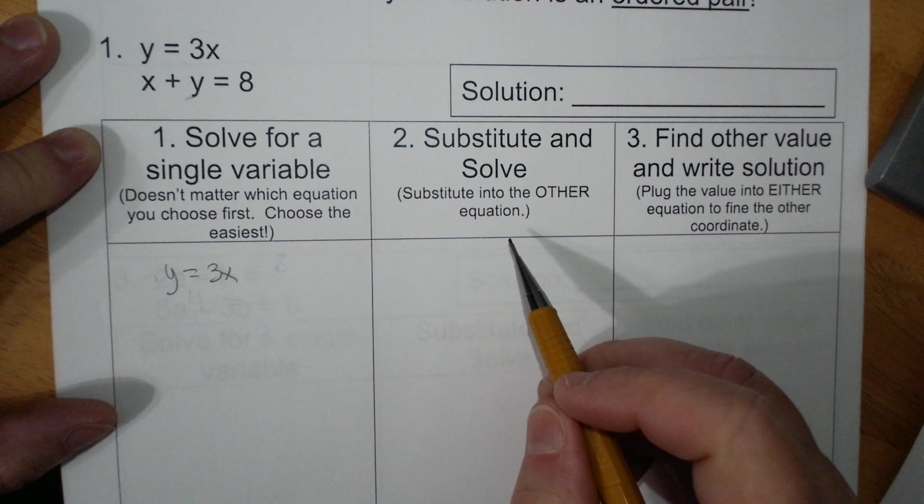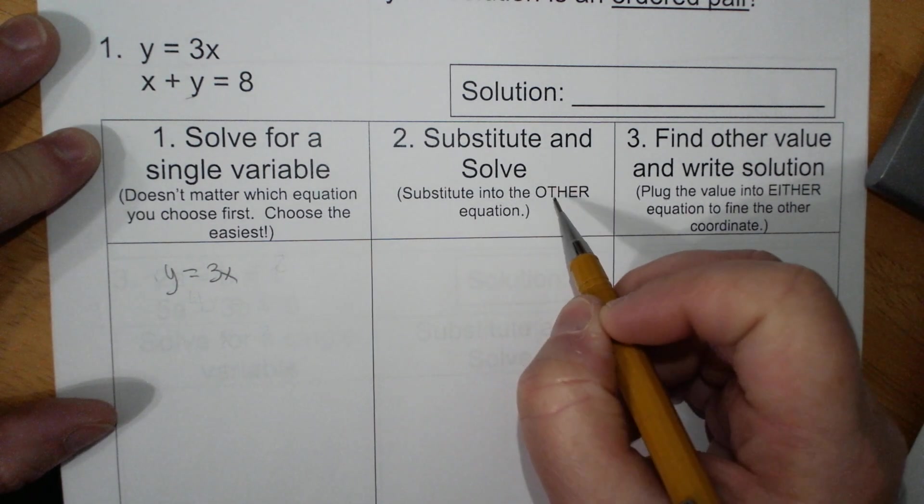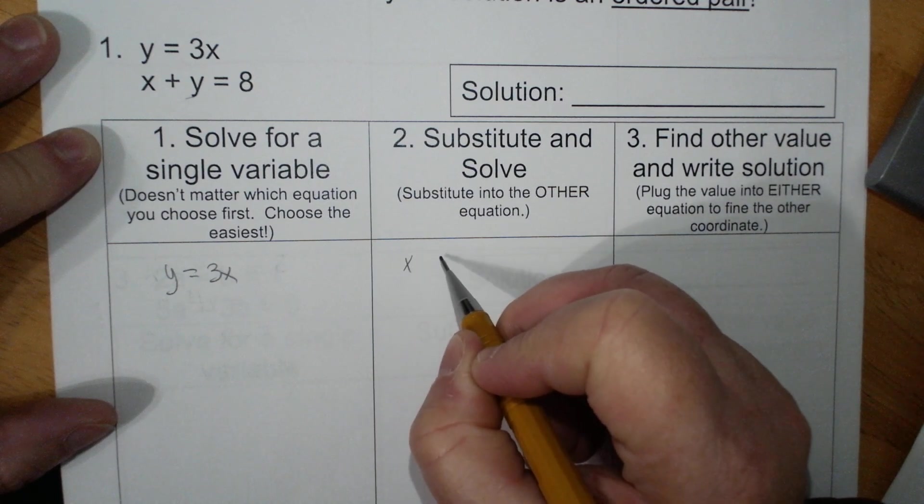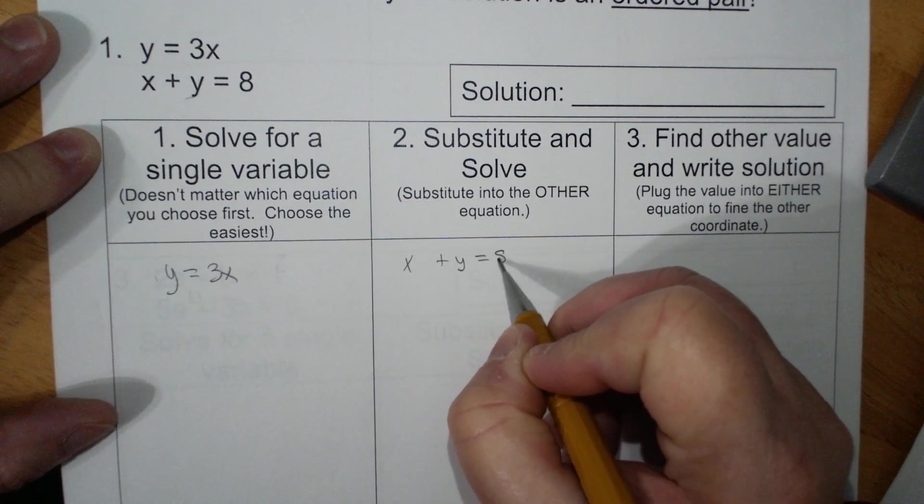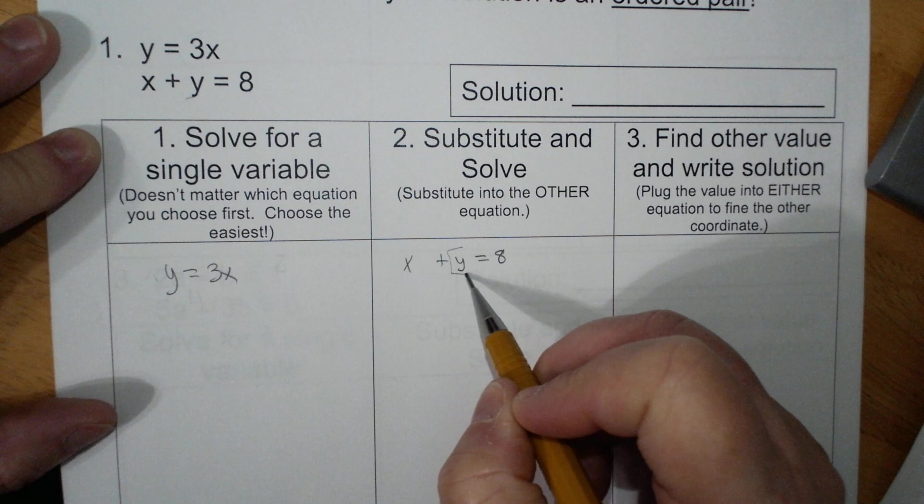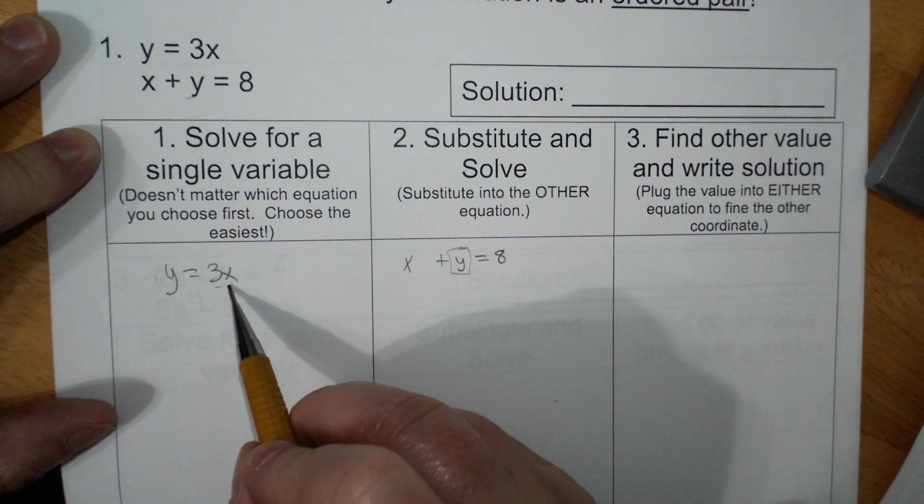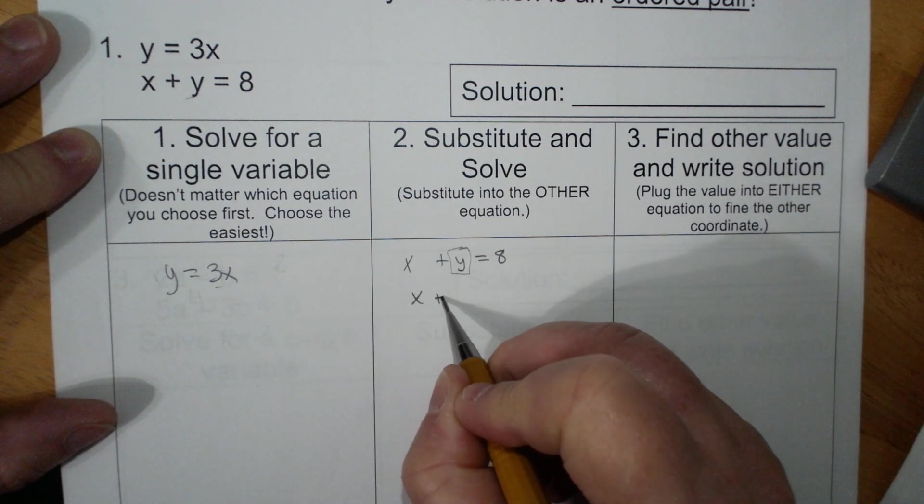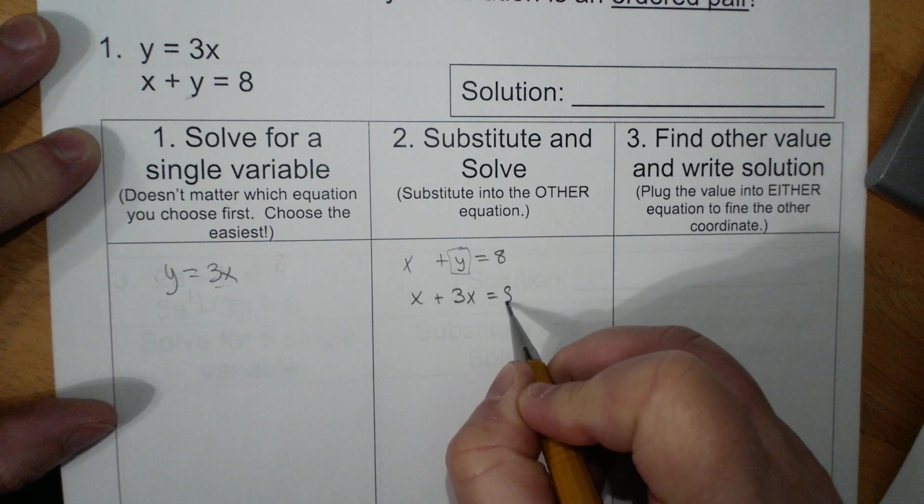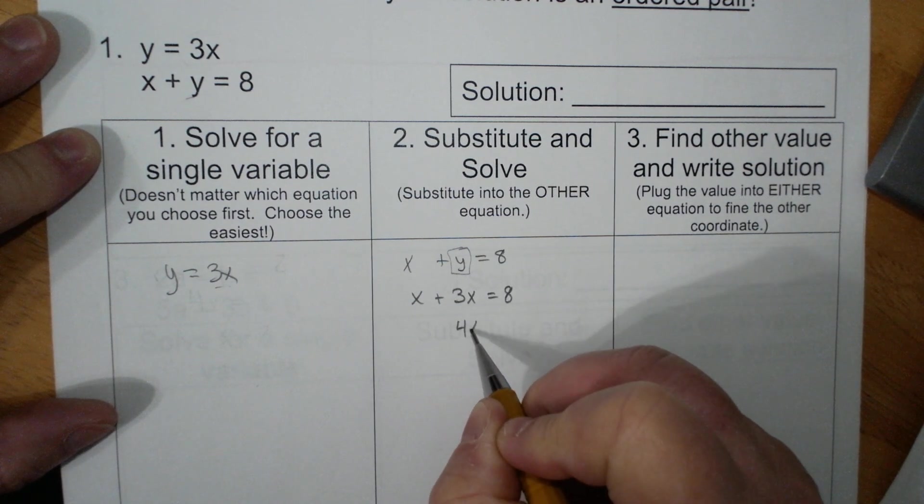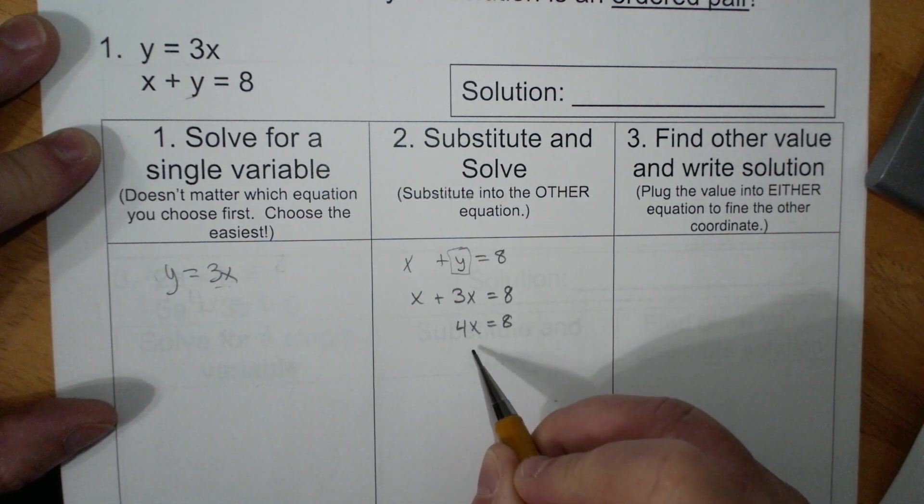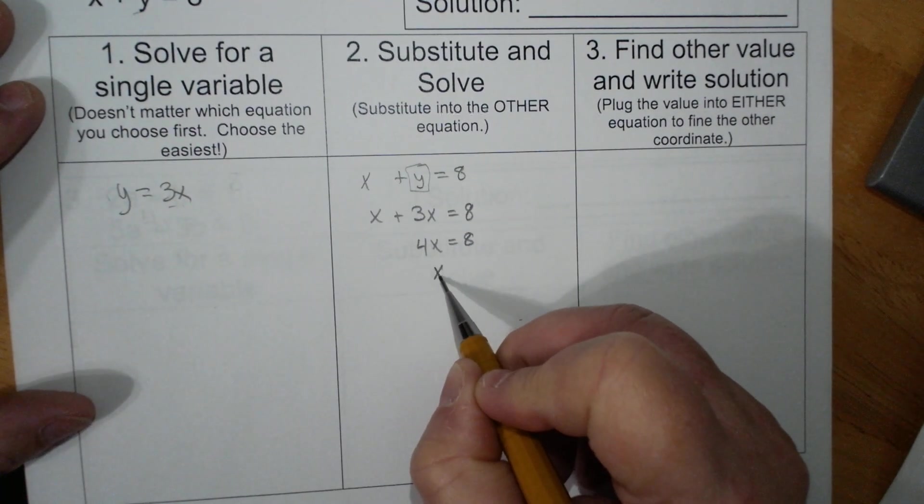Substitute and solve. I'm going to substitute it into the other equation. So x plus y equals 8. But instead of this y, I'm going to replace it with 3x. x plus 3x equals 8. 4x equals 8. Divide both sides by 4. x equals 2.